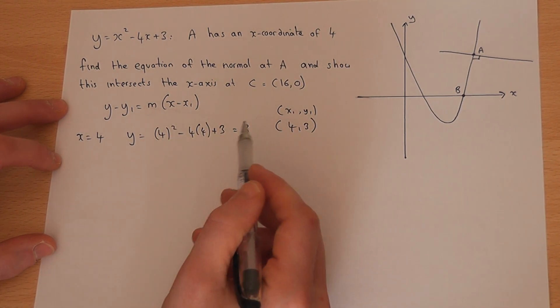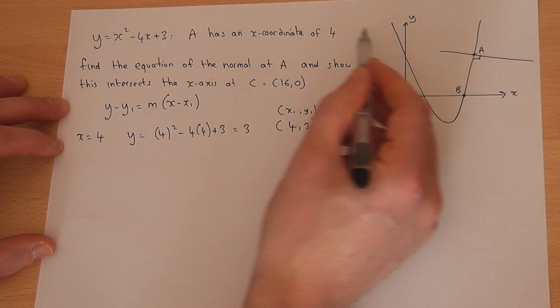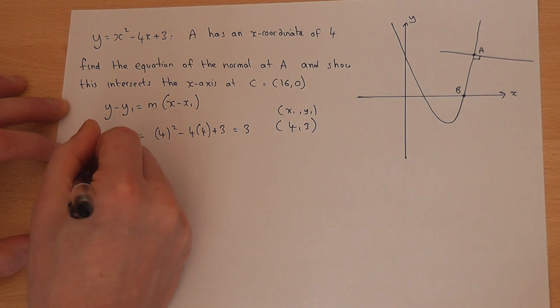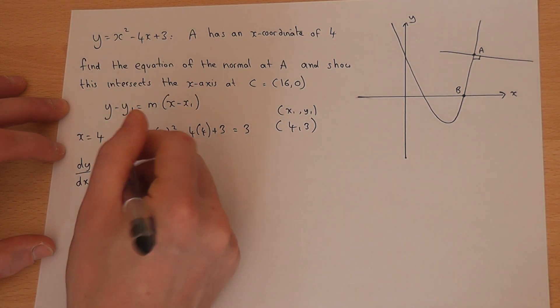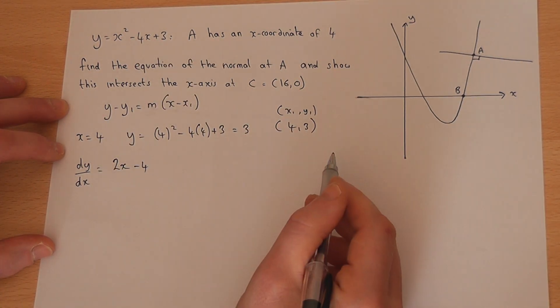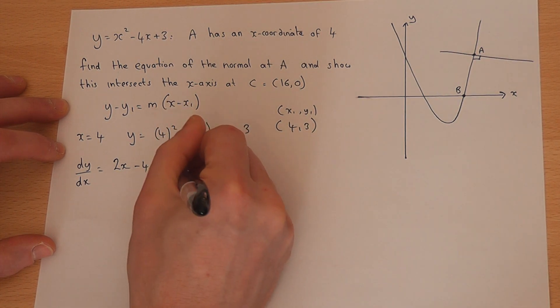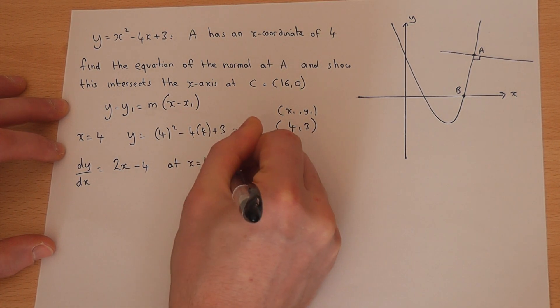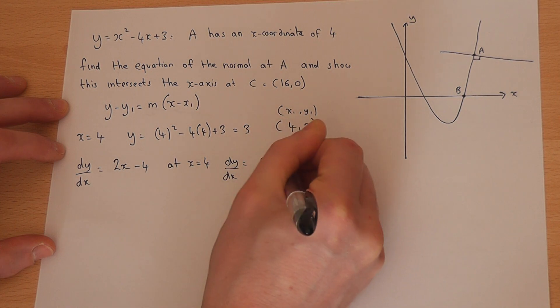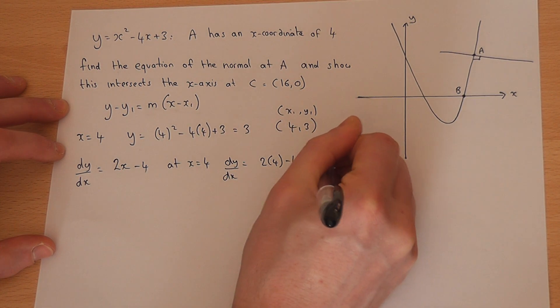We're still missing the gradient. To find it, we differentiate the equation of the curve: dy/dx = 2x - 4. At x = 4, dy/dx = 2(4) - 4 = 4.